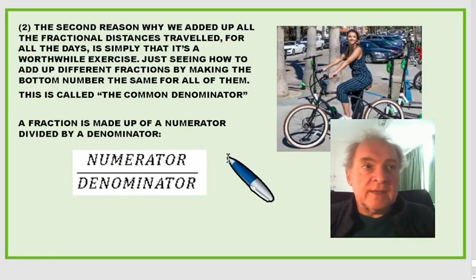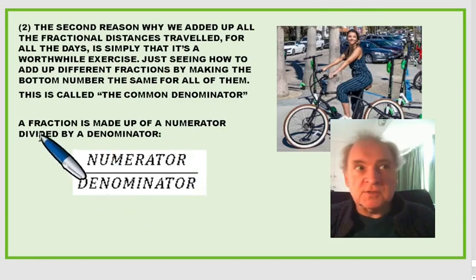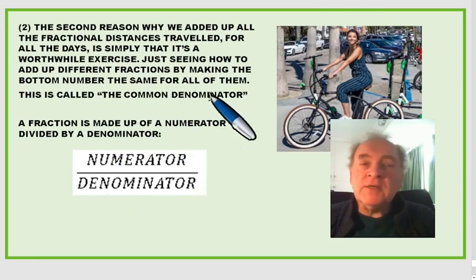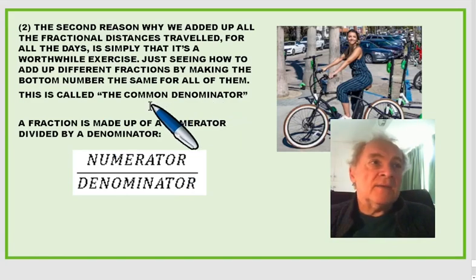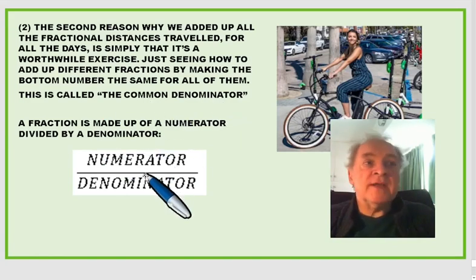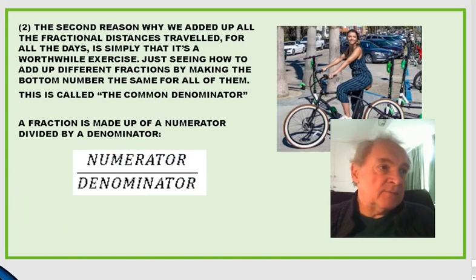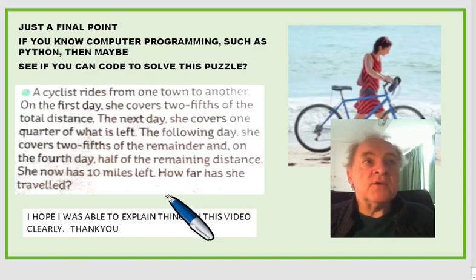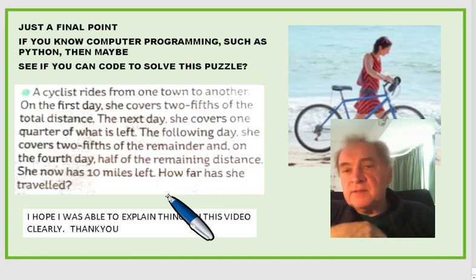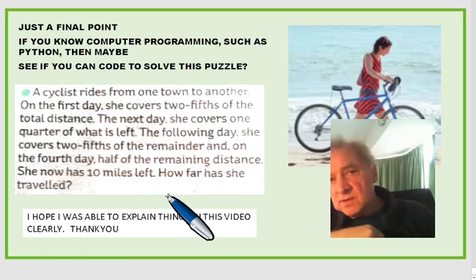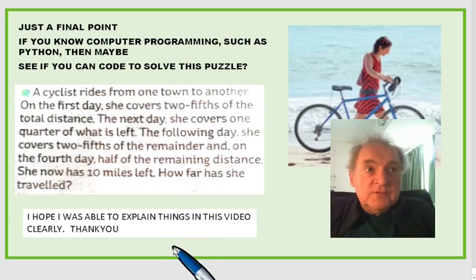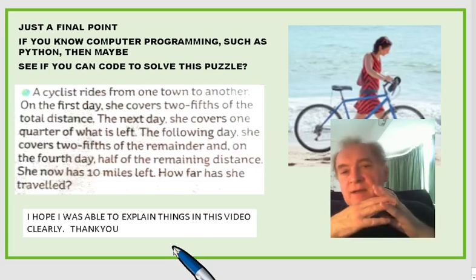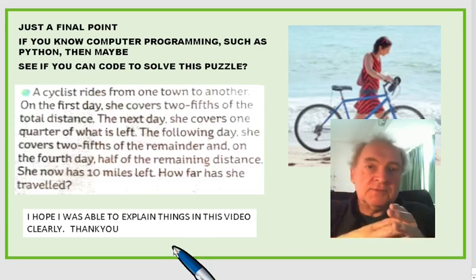Another thing about fractions: we made a common denominator of two hundred. A fraction is made up of a numerator and a denominator. As a final point, if you know computer programming such as Python, maybe you can try to code this problem. I hope I was able to explain things clearly in this video. Thank you for watching. If you like my videos, please subscribe.